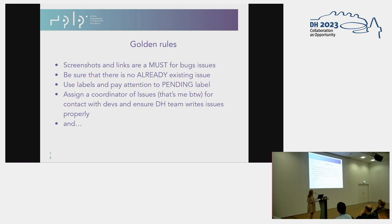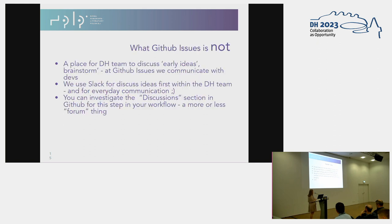We need to set a few rules if you want to communicate via GitHub Issues. I mentioned screenshots and links added — especially for bugs. Always check if there isn't an issue already existing on the topic. And you must assign a coordinator for issues — that's me, by the way — for contact with developers, and ensure everyone knows what each label means if they add screenshots and so on.